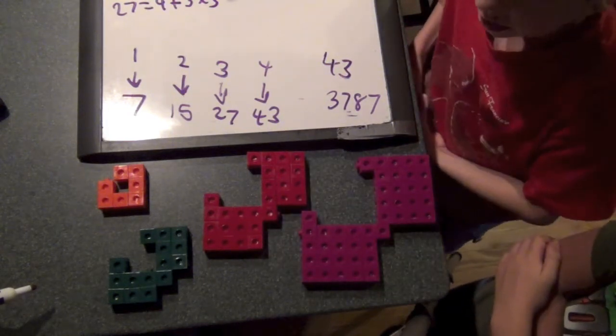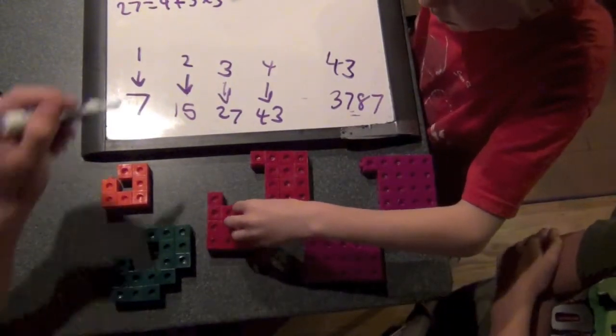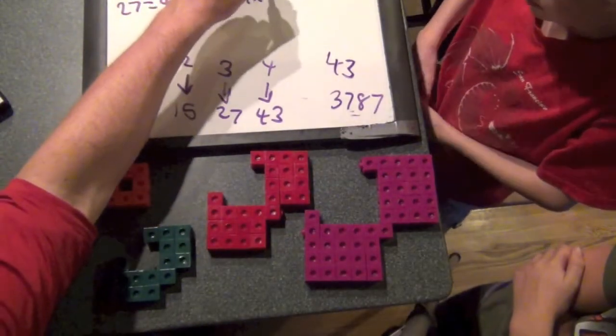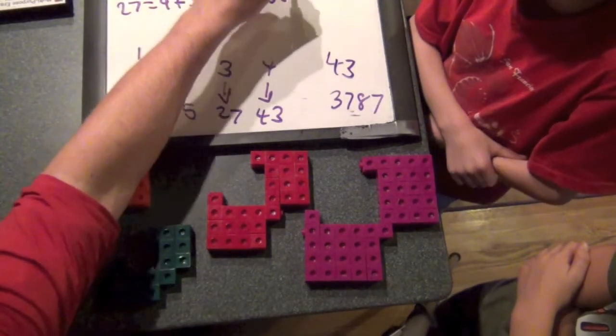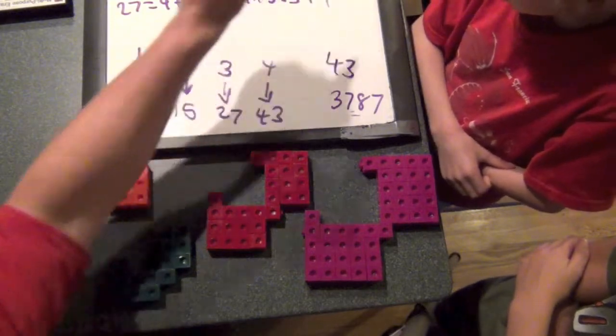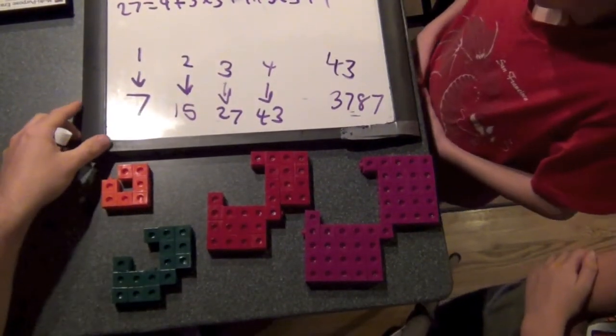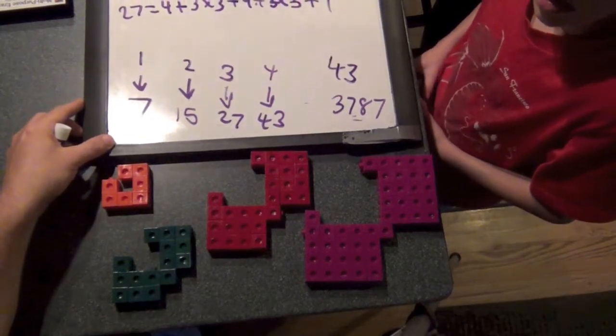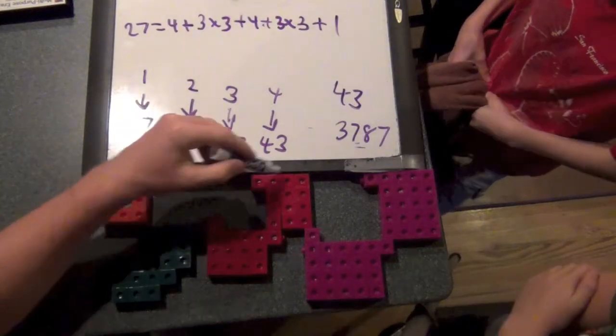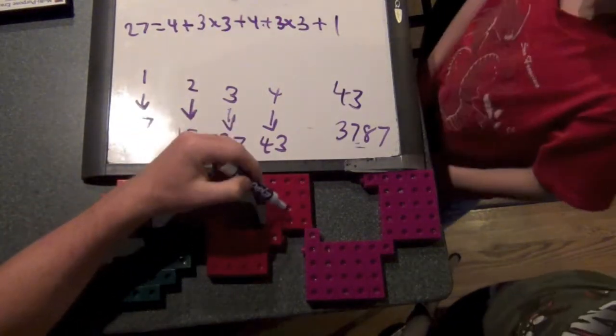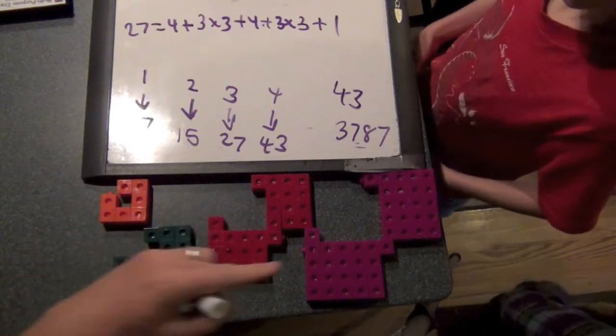Three times three. And then this is going to have the same amount except for one block. So it's going to have this four and this three times three. Yeah, four plus three times three, then plus one. Awesome. Oh, shoot. That might not be on camera. But that's okay. You explained it. I'm going to move it down just a little bit.